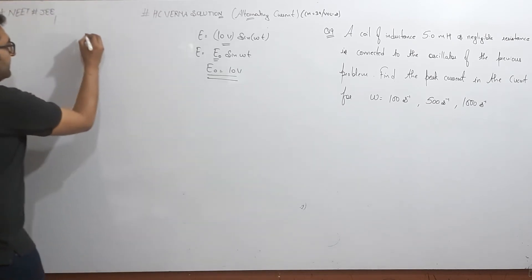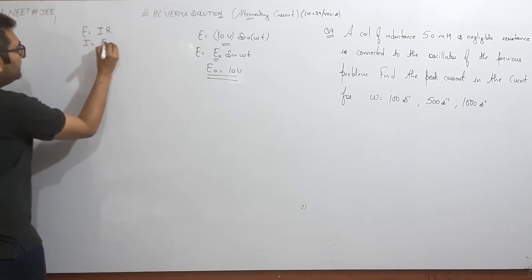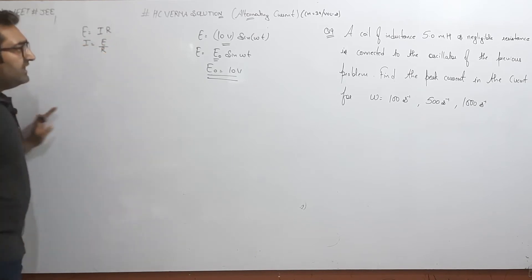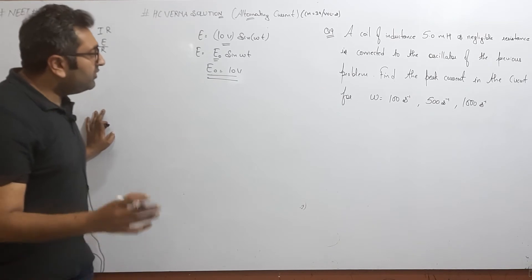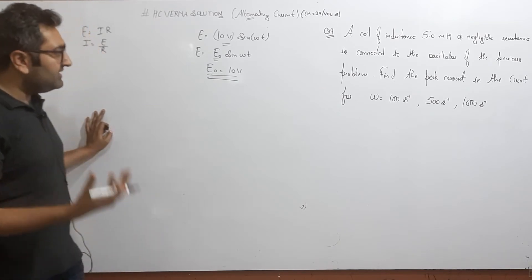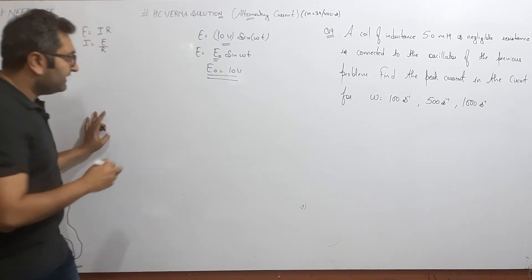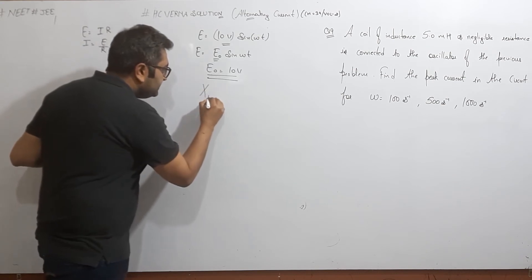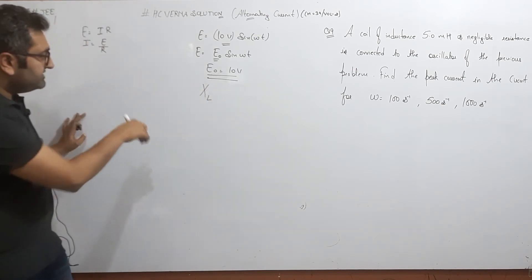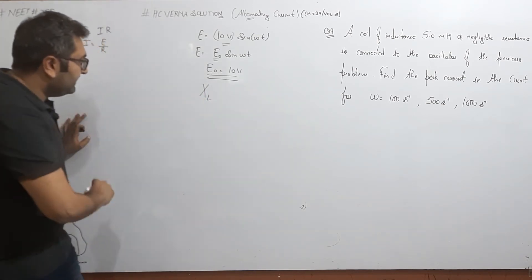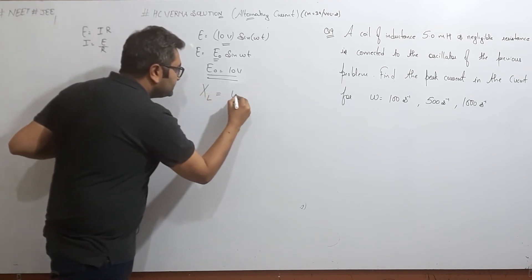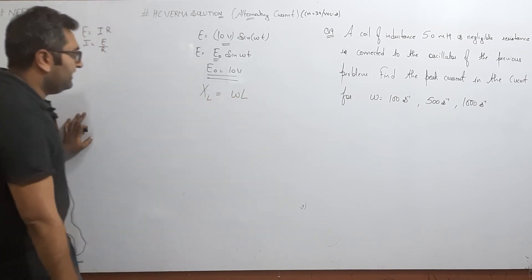After that, we have to find the peak current. For RMS voltage and resistance, i is equal to voltage by resistance. Now in this question there is a coil, and the coil also gives resistance, which you say inductive reactance. So the inductor has given the resistance, inductive reactance, which is XL which is equal to omega L. So this is the resistance.